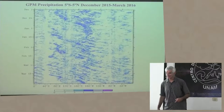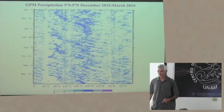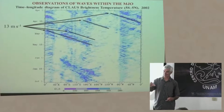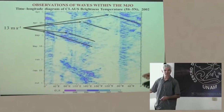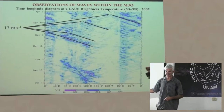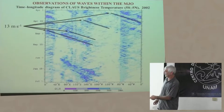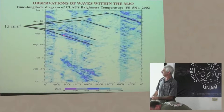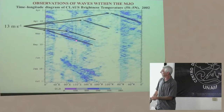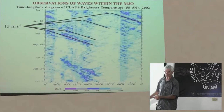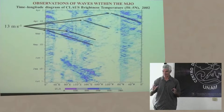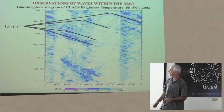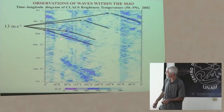[Question: How do you tell the difference between the MJO and the convectively coupled Kelvin wave looking at that diagram?] Actually, the event in the animation was kind of in between a Kelvin wave and the MJO. There is a continuum there, and it is actually difficult to cleanly distinguish between large Kelvin waves and the MJO at times. The other information would be the circulation associated with the waves, but even that's tricky because they tend to be organized in a similar way.